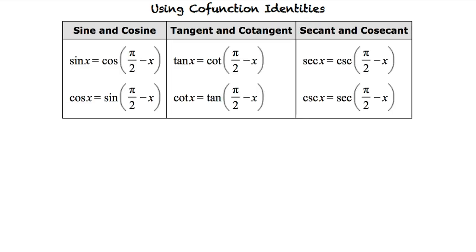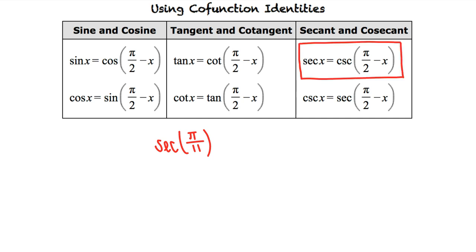Let's take a look at an example problem. Let's use a co-function to write an expression equal to secant of pi-elevenths. Looking at our co-function identities, we see that secant of x equals cosecant of pi-halves minus x. In our problem, we see that x equals pi-elevenths.